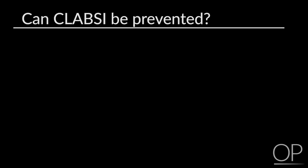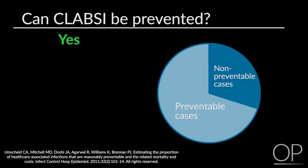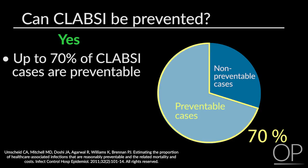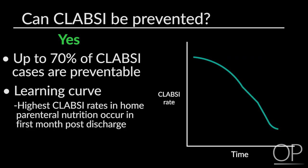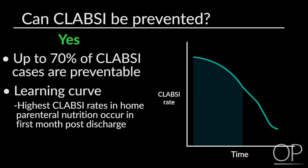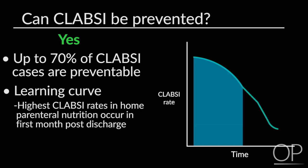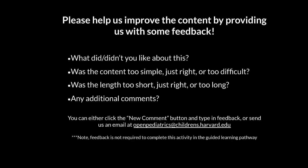You then think, can these situations be prevented? Yes, in fact, many central line associated bloodstream infections are preventable. It is suggested that up to 70% of CLABSIs are preventable with the implementation of evidence-based prevention practices. This may actually be related to a learning curve. The highest rates of CLABSI in patients receiving home parenteral nutrition occur during the first month post-hospital discharge. That concludes our case of a GI patient with a central line and fever. Thank you for participating. Please help us improve the content by providing us with some feedback.